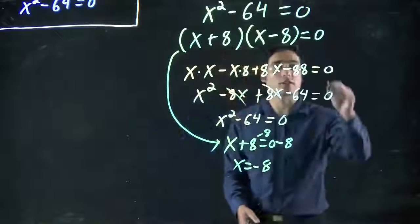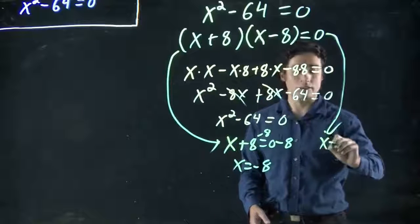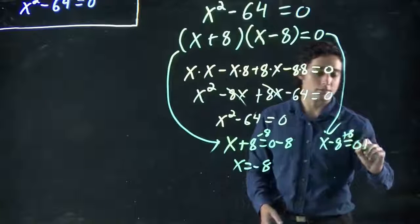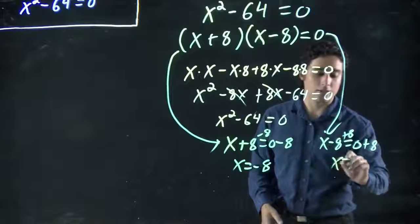Or, this other side would give us x minus 8 equals zero. Add 8 to both sides. x equals 8.